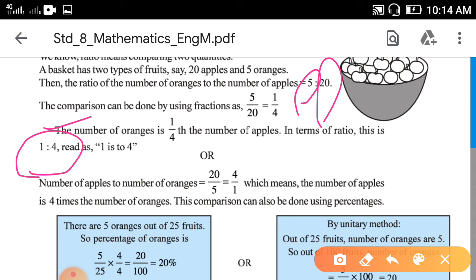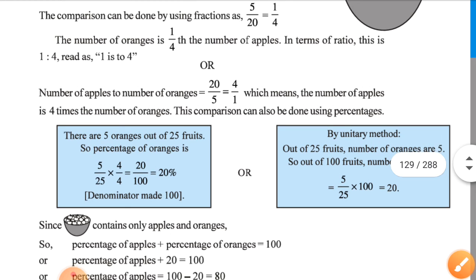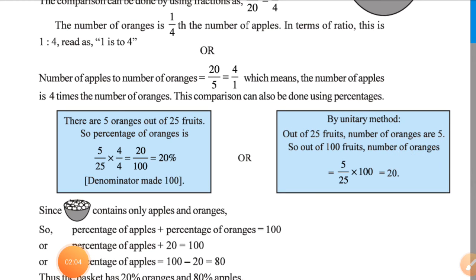The number of oranges is less as compared to apples. So how much less? It is 1/4th. If you write number of apples to the number of oranges...